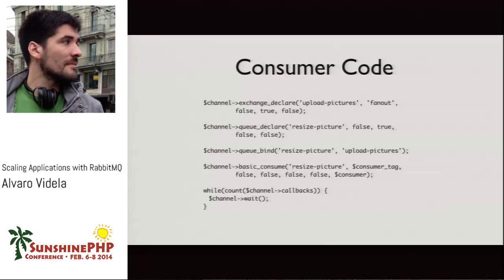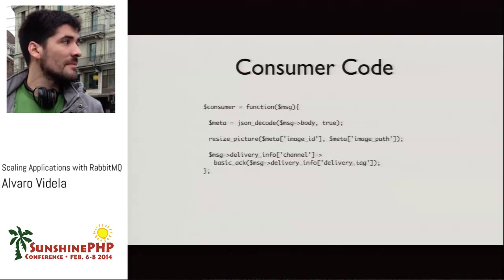A consumer is just a function that takes the message. The message has a body, you decode it, call resize_picture, and then from the delivery info you get the channel — that's the channel used to receive the message — and you call basic_ack. The delivery info also has a delivery tag which matches the message so Rabbit knows which one you're acknowledging. You can also grab the channel and publish a new message, enabling a pipes-and-filters pattern where this consumer, after resizing, sends a new message for the next step.